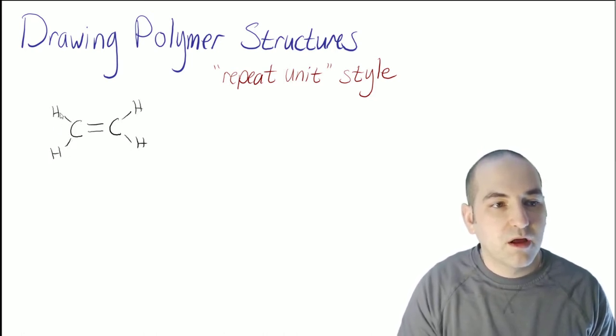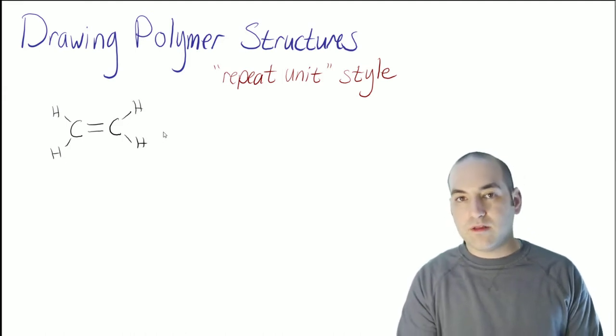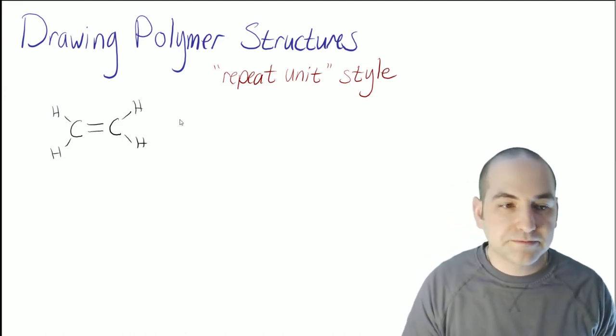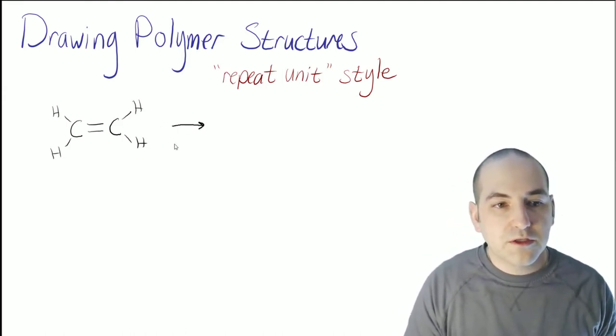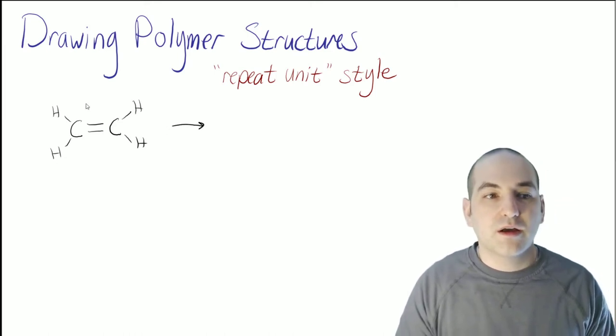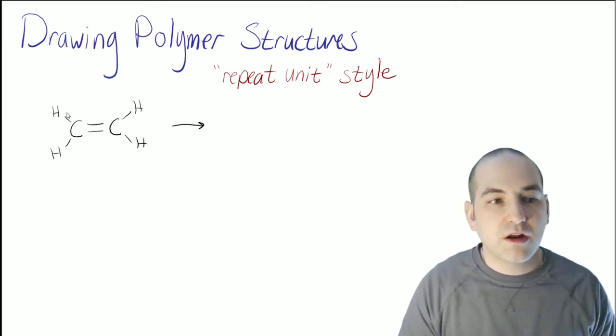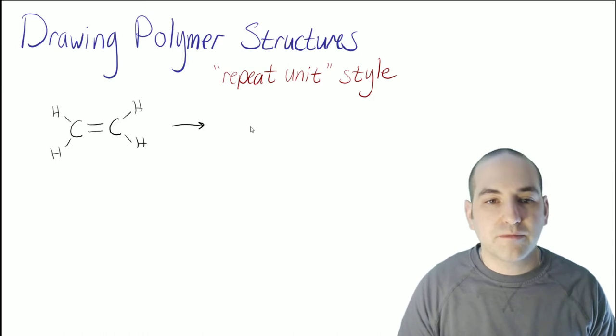Now you'll remember that this is an example of a Lewis structure where we show all the connections for all the atoms. And when it undergoes polymerization, something initiates the polymerization and then a whole bunch of these connect to each other.